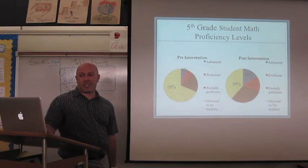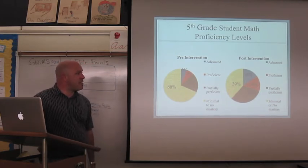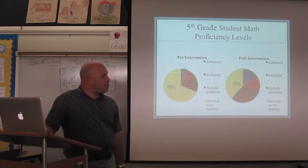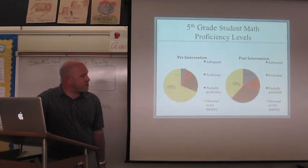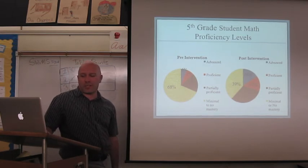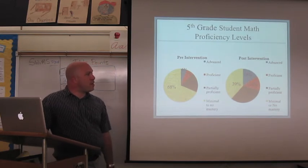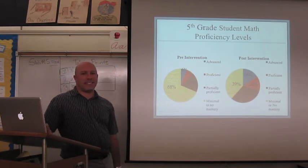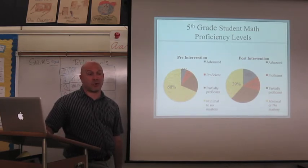After the intervention those numbers doubled or roughly doubled. To 16% advanced. 14% scored partially proficient. 31% or sorry. 14% scored proficient. 31% were partially proficient. And then the number did decrease from 68 to 39%. So although the intervention showed some gains in achievement. There's still concern that there are a number of students that are not scoring proficient in math.